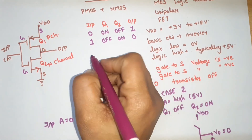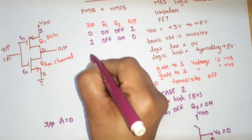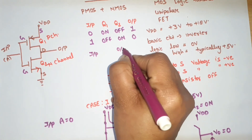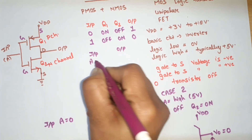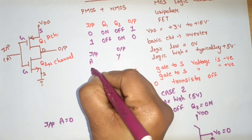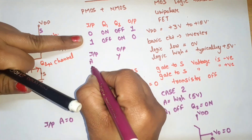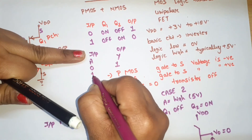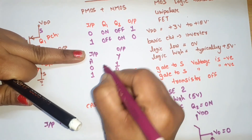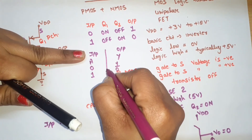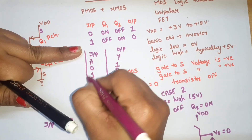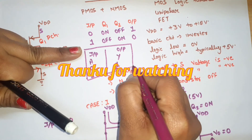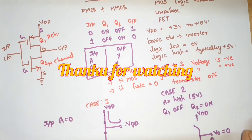Now we can make the truth table for this circuit. Input A, Output Y: if input A is 0, output is 1; if input A is 1, output is 0. This truth table confirms that this circuit is an inverter — a NOT gate.